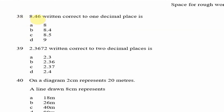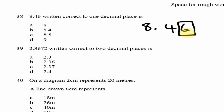Looking at question 38: 8.46 written correct to one decimal place. We look at the digit in the second decimal place, which is 6. Since 6 is 5 or greater, we round up the digit in the first decimal place — the 4 — by one, making it 5. So the answer is 8.5, which is option C.